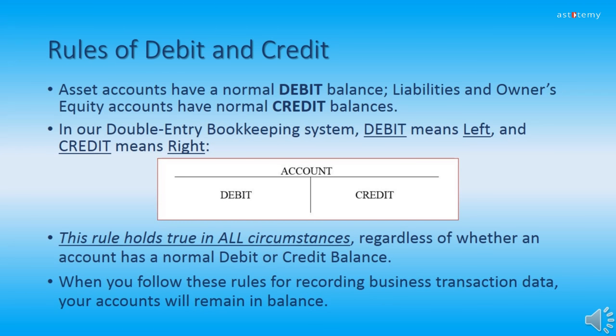Now we get into the rules of debit and credit. Asset accounts have a normal debit balance, whereas liabilities and owner's equity accounts have normal credit balances. In our double entry bookkeeping system, debit simply means left and credit simply means right, as depicted on our screen. This rule holds true in all circumstances, regardless of whether an account has a normal debit or credit balance. Debit will always mean left; credit will always mean right. Please try not to read too much into it — just remember that when you follow these rules, your accounts will remain in balance.